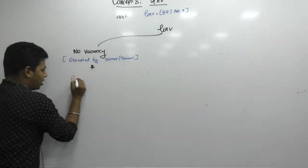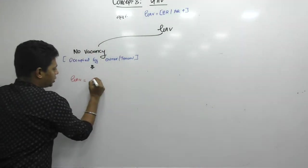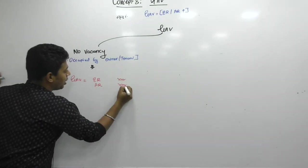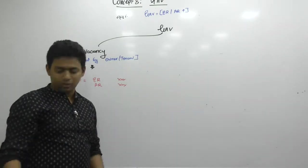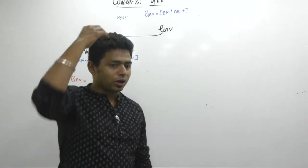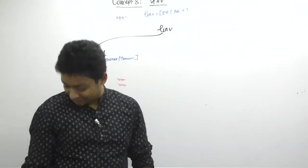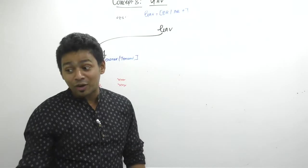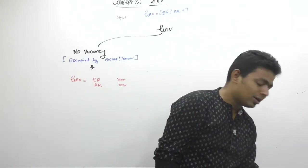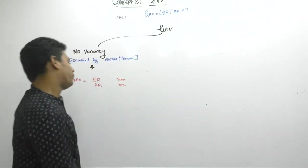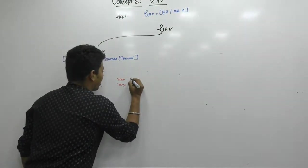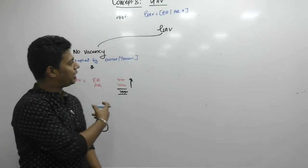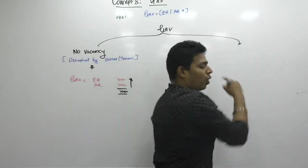In no-vacancy case, GAV equals expected rent or actual rent, whichever is higher. By default, the assumption of this chapter is that the assessee will always try to show lower actual rent to the government. Therefore, the government determines an expected rent — and whichever of expected rent or actual rent is higher is taxable. The by-default assumption of this chapter is that the assessee is a tax evader.